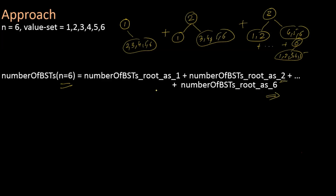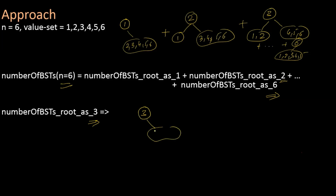Let's try and compute the right-hand side of this equation. For example, I will try to compute the number of BSTs with root as 3. The root is 3, and 4, 5, 6 are in the right subtree and 1, 2 are in the left subtree. Let's compute the total number of unique BSTs possible for this combination.